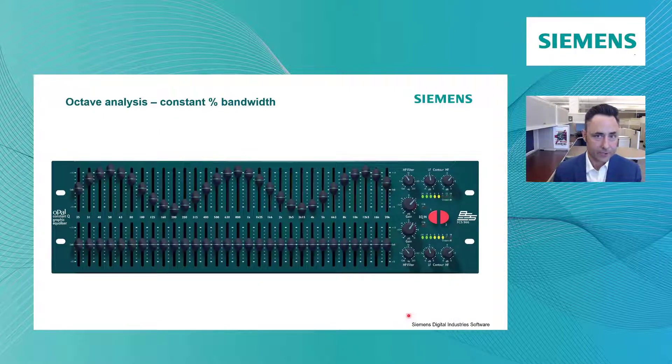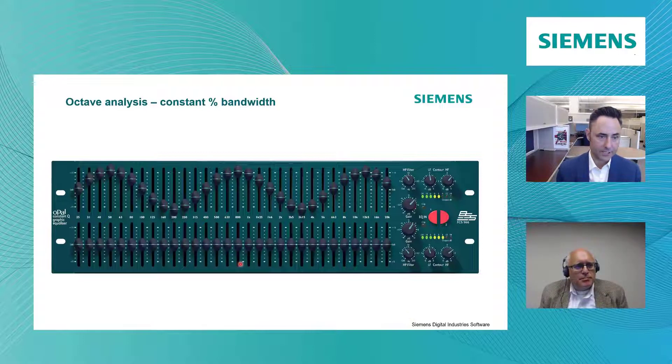So our brain doesn't hear linear frequency. So we lump them together in these logarithmic octaves. That sort of mimics how our brain hears sound in terms of frequency.